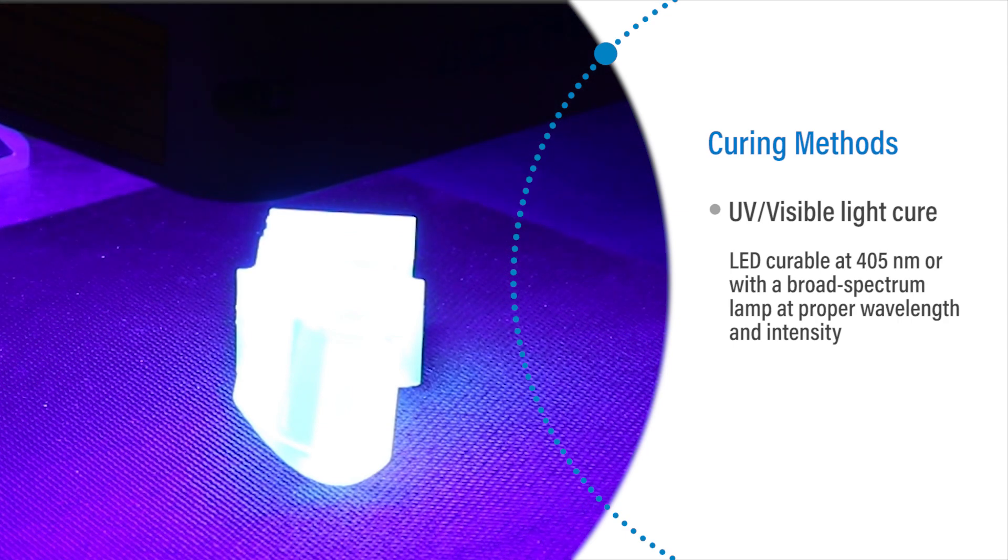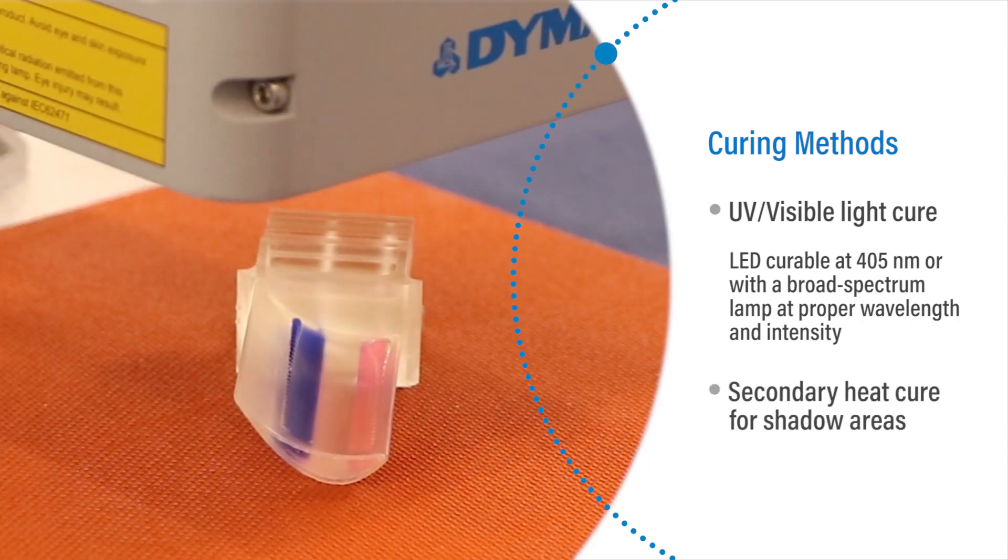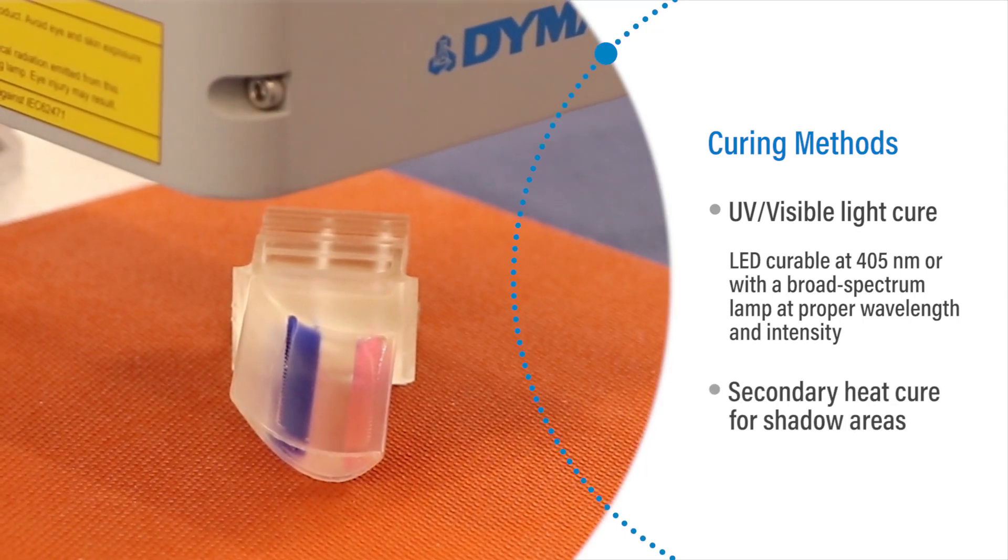Any material inside of the part that is not curable with light, known as shadow areas, cures with secondary heat.